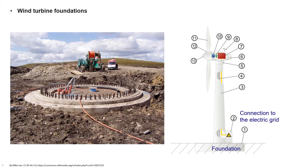On the other hand, in onshore turbines, the most common type of foundation is a gravity foundation. As seen here in the picture, a large mass of concrete spread out over a large area is used to resist the turbine loads. Wind turbine size and type, wind conditions, and soil conditions at the site are the determining factors in the design of the foundation.